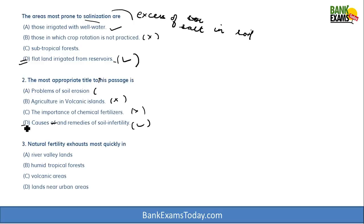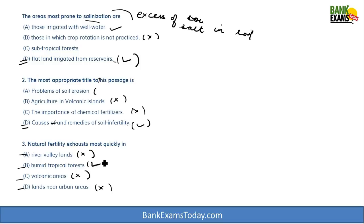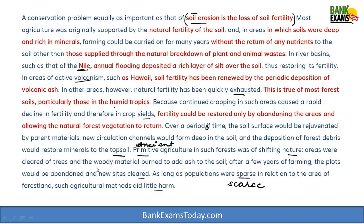Question 3 — natural fertility exhausts most quickly where? Not river valleys, not volcanic areas, not land near urban areas, as none of those were discussed in that context. The answer is B — humid tropical forests. The passage states: 'natural fertility has been most quickly exhausted; this is true of most forest soils, particularly those in the humid tropics.'